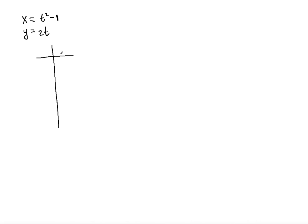So first what we can do, we can find the x and y using the parameter t starting from t equals 0 and increasing values of t. When t equals 0, x equals negative 1, y equals 0.